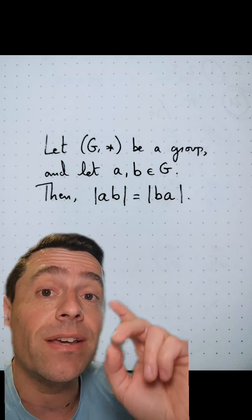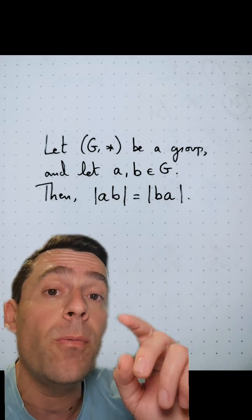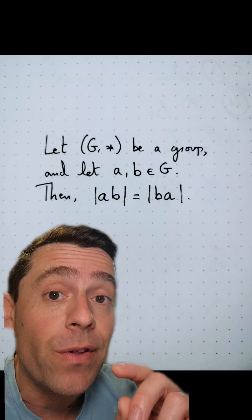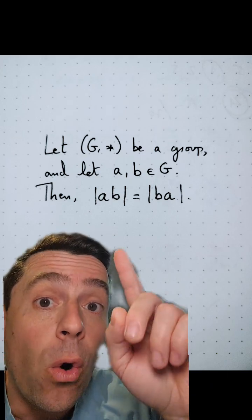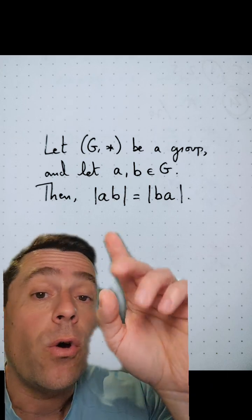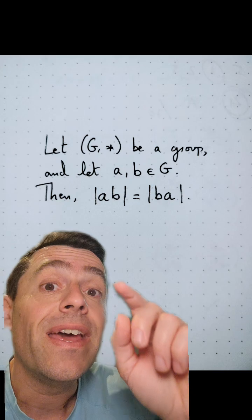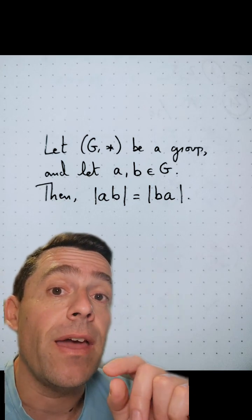Let's give a proof of the following fact in group theory. Let G be a group. Let A and B be elements of the group that show that the order of A times B, or A star B if you want, is the same as the order of B times A.